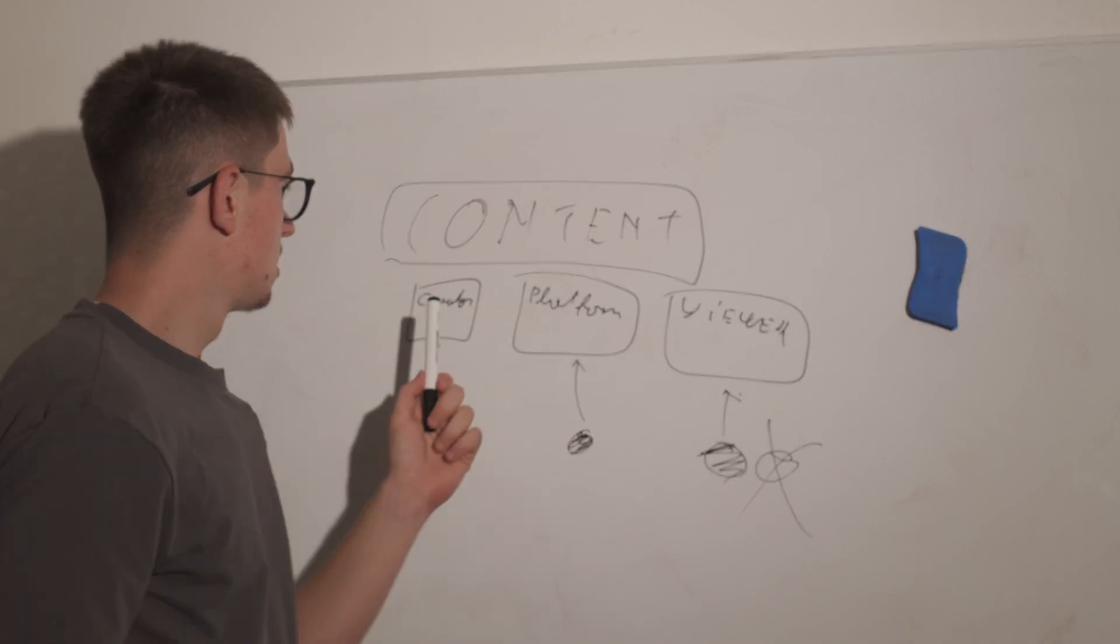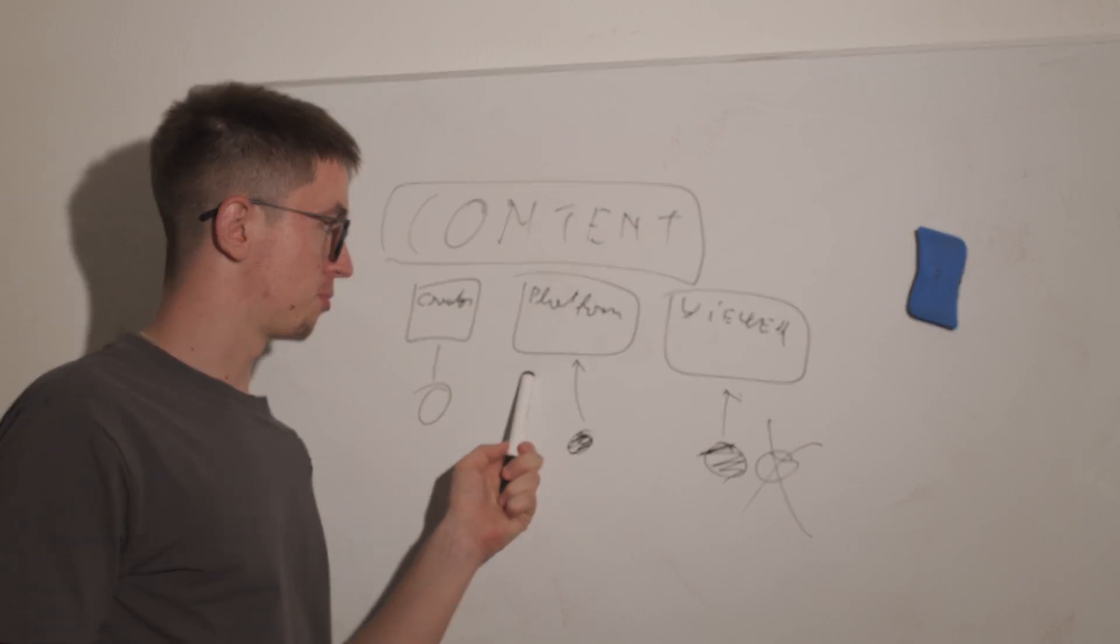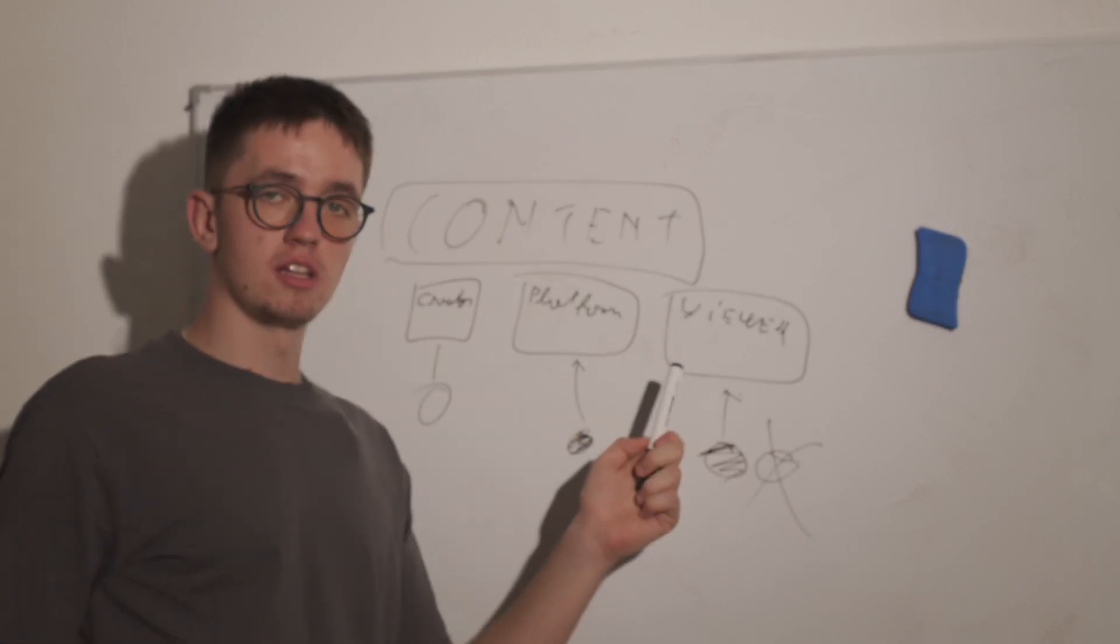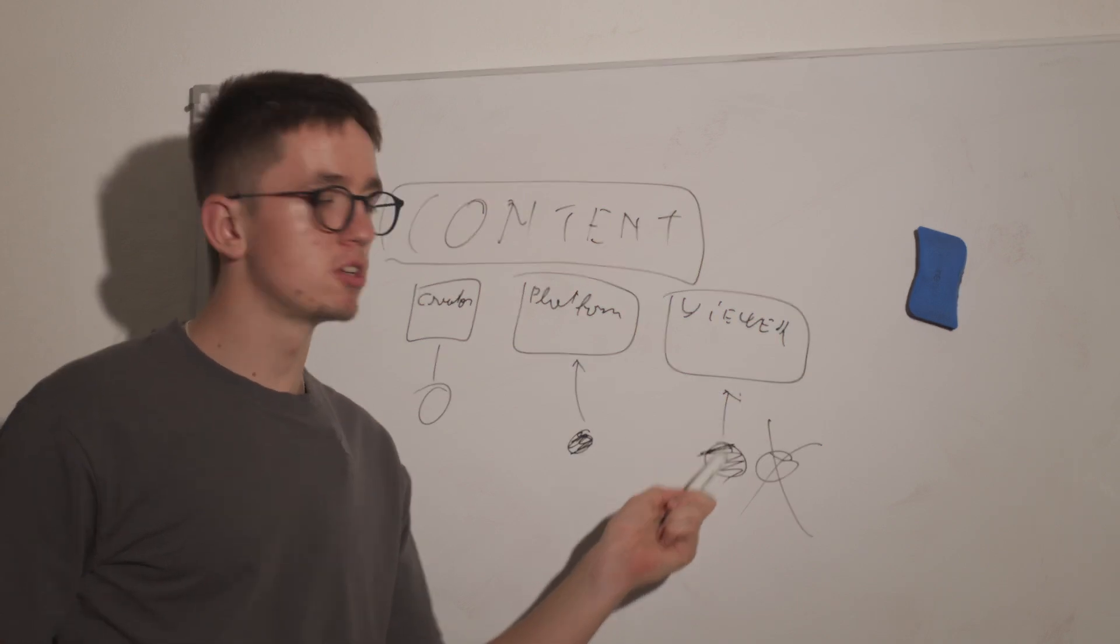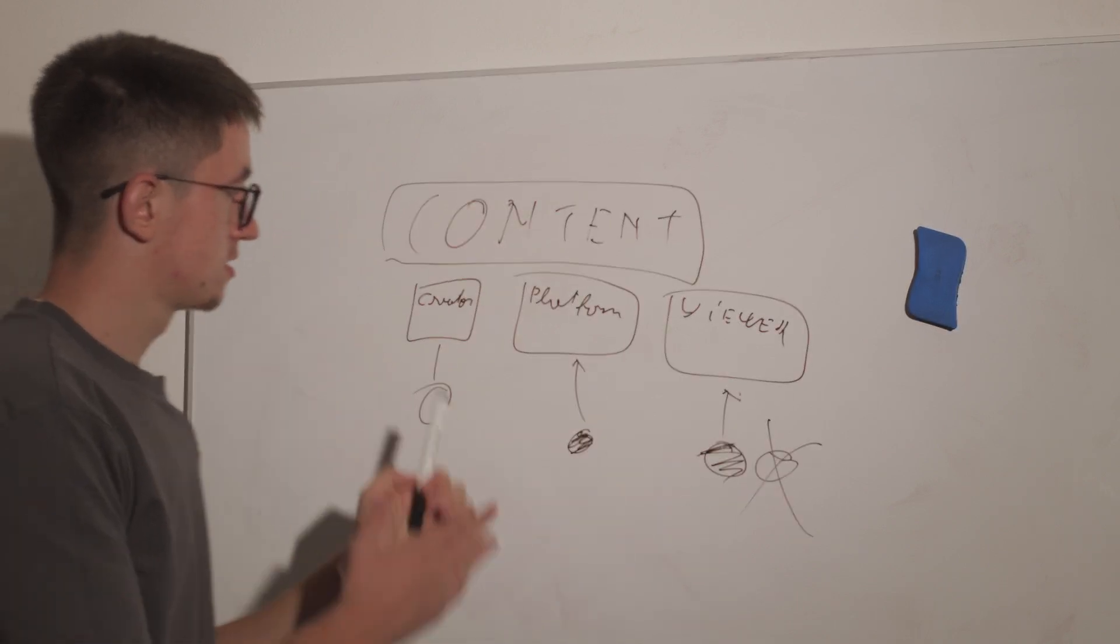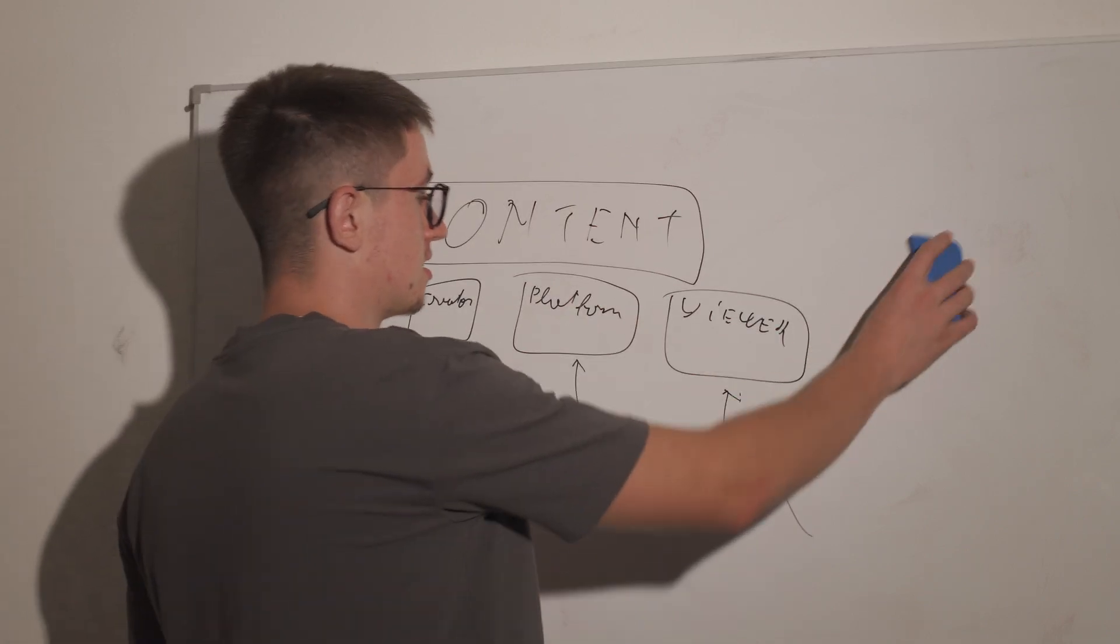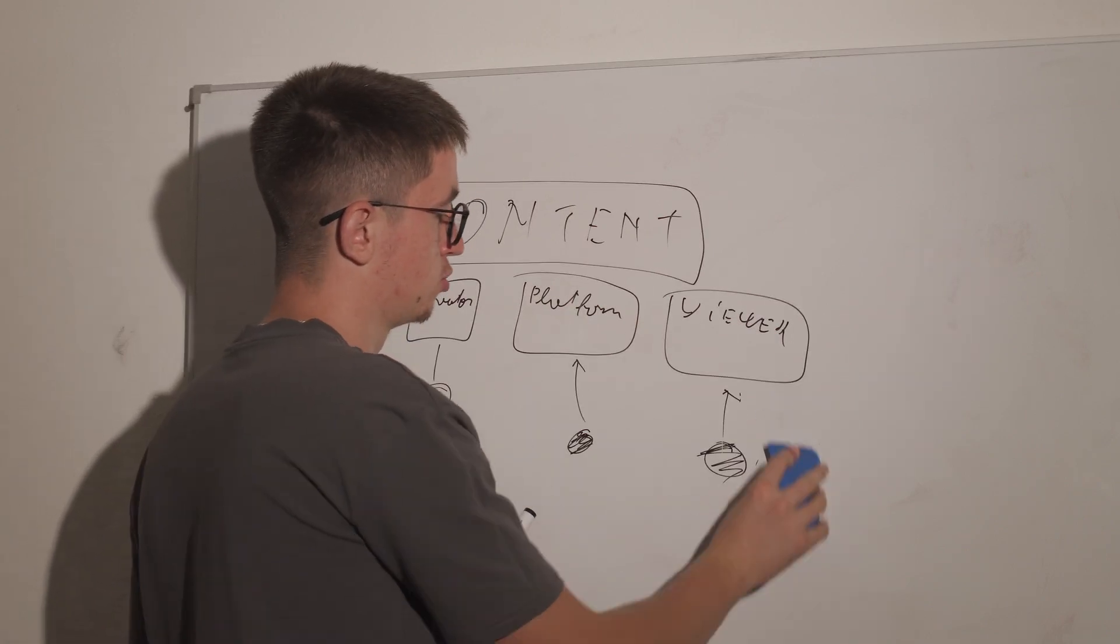The creator goes and creates a video. The platform is showing this video and the viewer is the thing which watches it or doesn't watch it. You can influence how the video is created. You cannot influence the platform. You can only influence if the viewer is watching the video by how you created it.